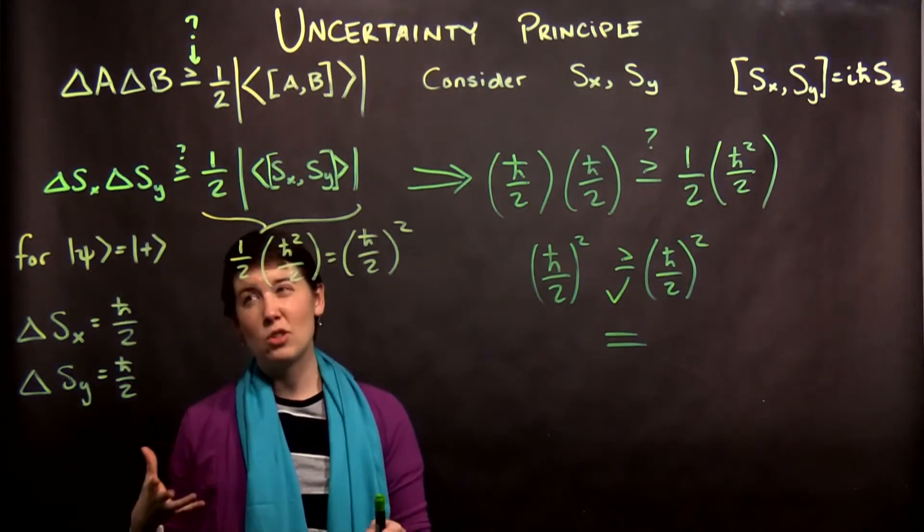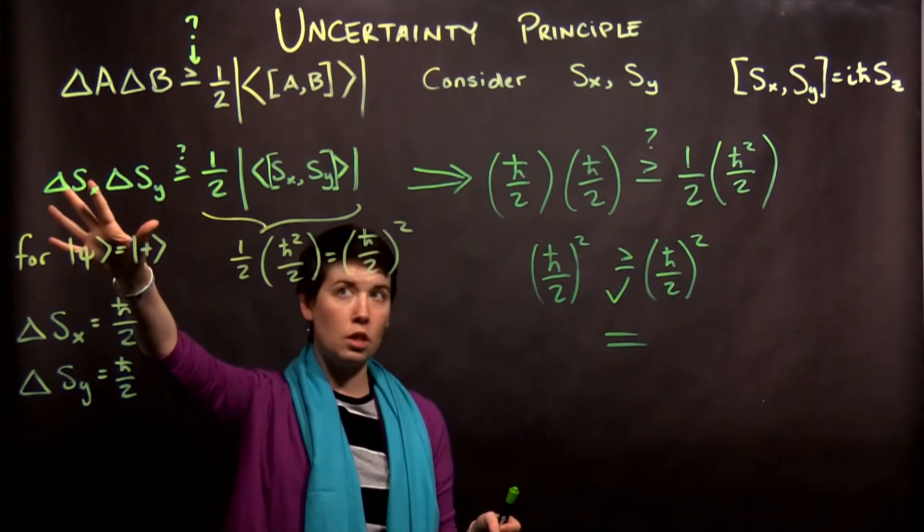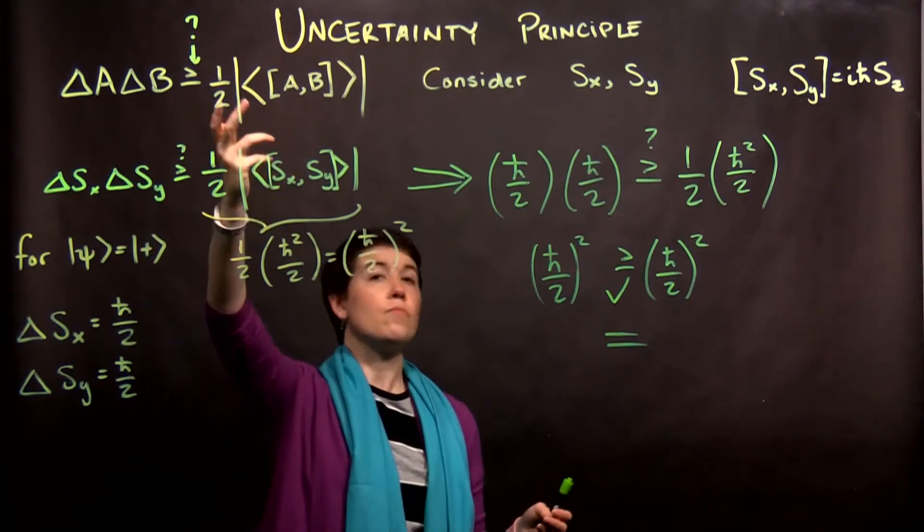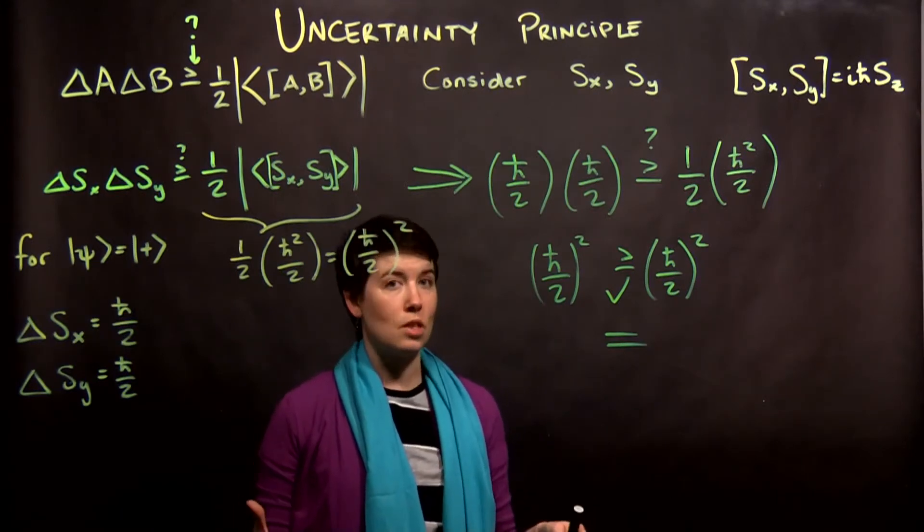But the point is we could have actually calculated a different spin state that maybe this side is bigger, and that this side doesn't actually get bigger. But in this case, this is going to be as good as it gets.